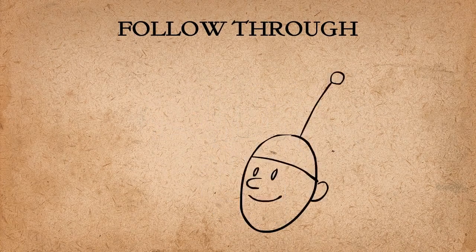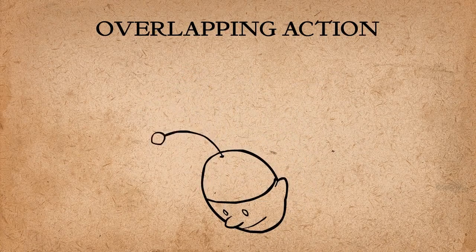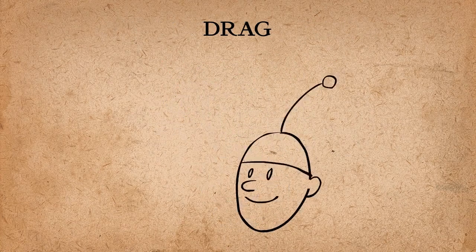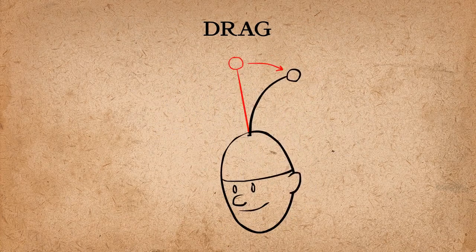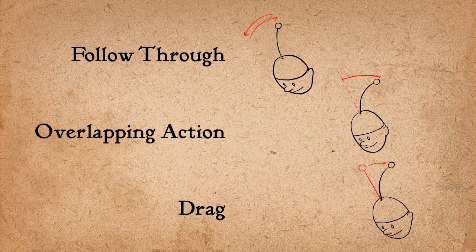For example, follow-through refers to the way parts of the body continue to move after the body is stopped. Overlapping action describes the offset between the timing of the main body and its other parts. Drag describes the technique of delaying the movement of body parts in relation to the main body. All three of these are basically describing different aspects of the same thing.